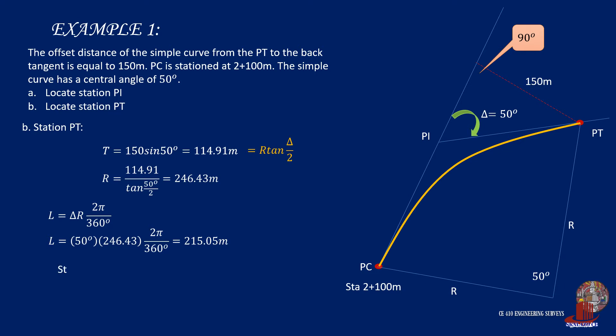Now start from station PC, which is 2 plus 100 meters, and add L, which is 215.05 meters, giving 2 plus 315.05 meters. This is station PT.